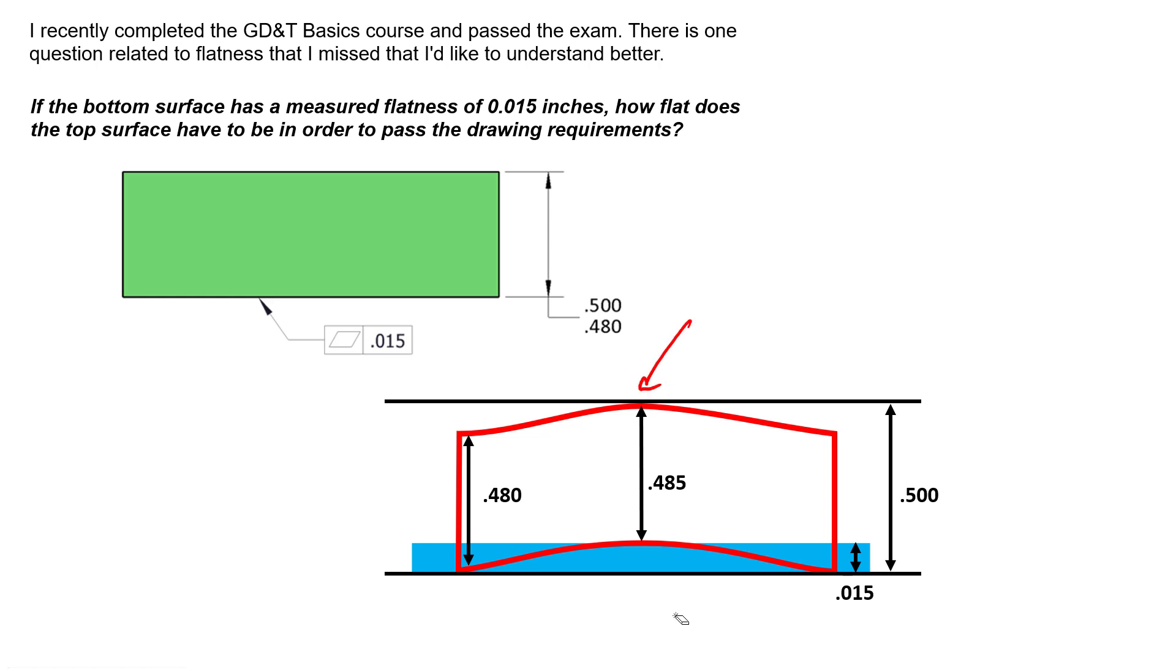So from here to here, we've used all 15 thousandths of our flatness error, which is rather convenient because we can see that we're at the top of our envelope and we've used up all of our flatness error. But the question is, how much flatness error can this top surface have and pass the requirements of the drawing? Well, if we simply subtract this value from this value here, we can see the equivalent worst case deviation in flatness that that top surface can have, which is 20 thousandths.